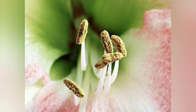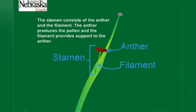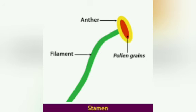The next is the stamen. There is a filament and then the anther. You will have the powdery matters there. The stamen consists of the anther and the filament. The anther produces the pollen and the filament provides support to the anther. Inside the anther there are the pollen grains — if you break open the anther you will find a number of pollen grains.